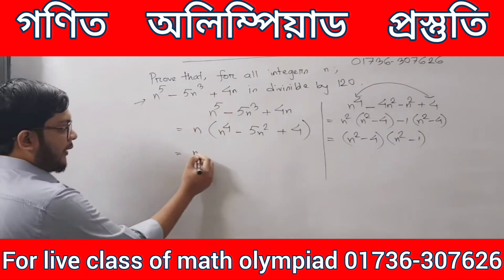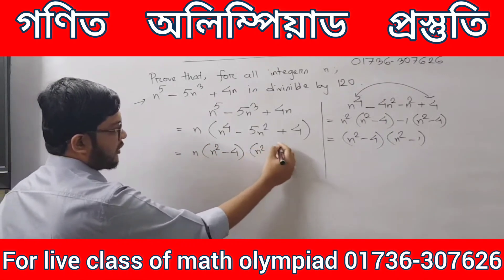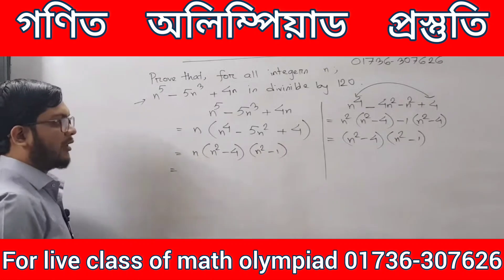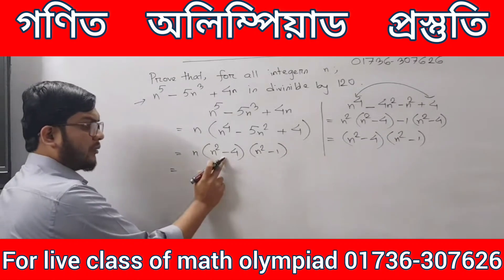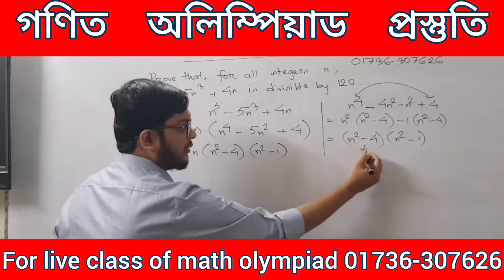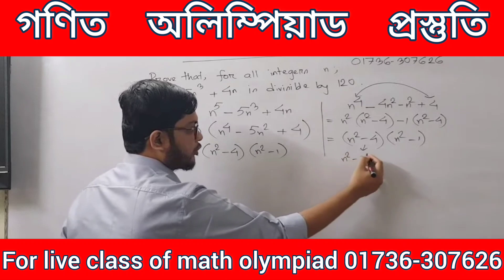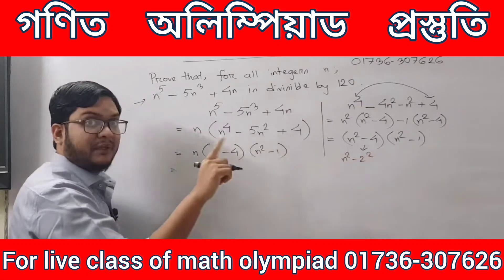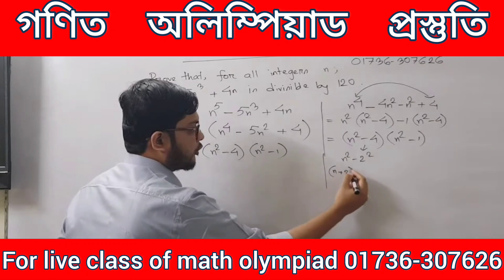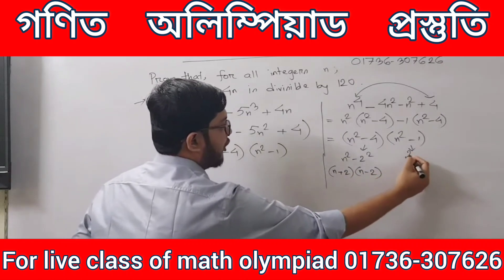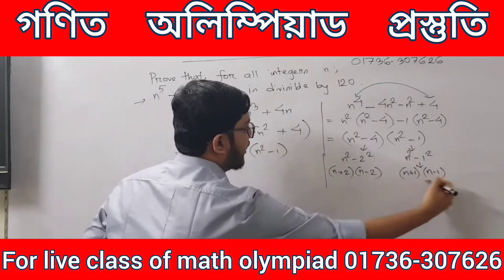We have to write n into n square minus 4, and we have to write n square minus 1. We apply the a square minus b square formula: n square minus 4 is n square minus 2 square, and n square minus 1 is n square minus 1 square.